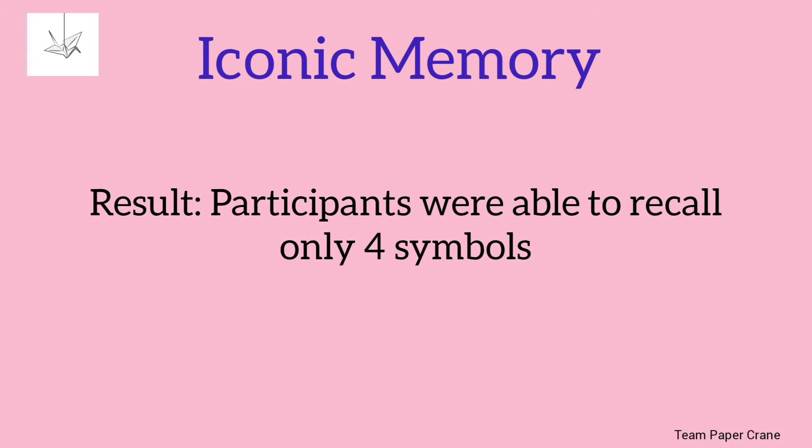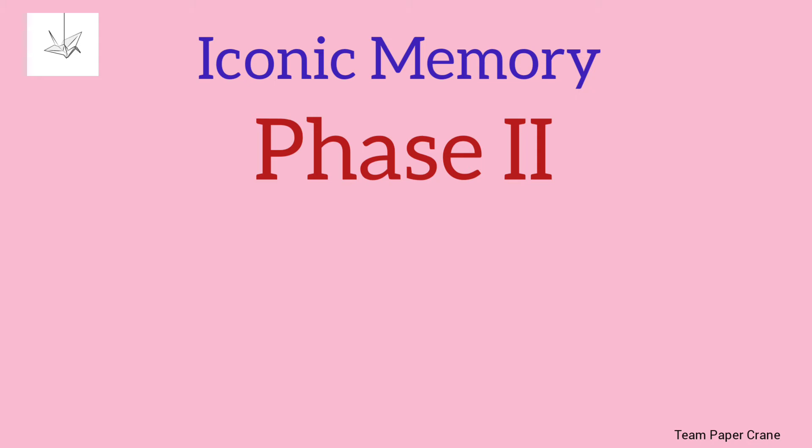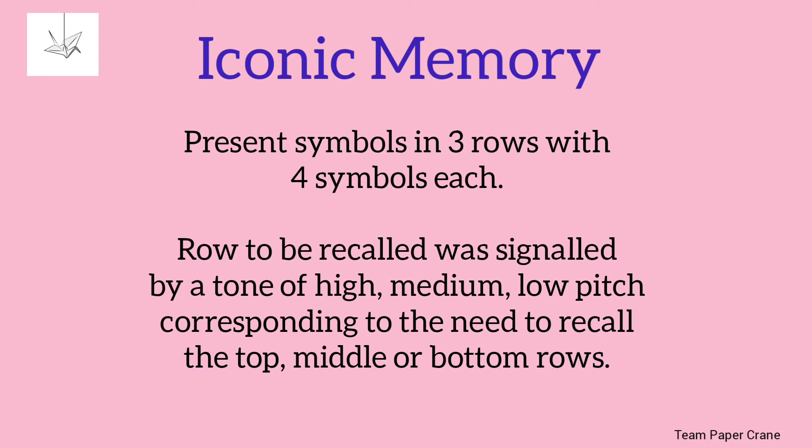In Phase 2, the experimenter presents 3 rows of 4 symbols on the screen. To signal which row to recall, tones are used: a high pitch tone for the first row, a medium pitch tone for the second row, and a low pitch tone for the third row.